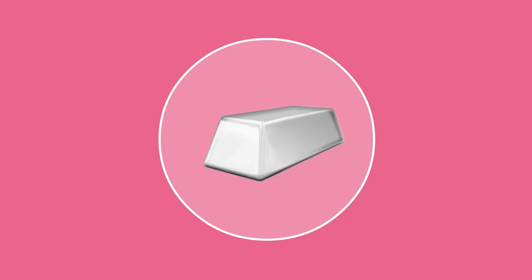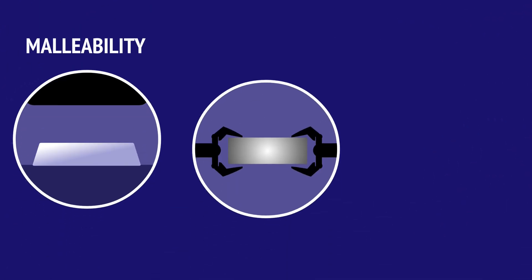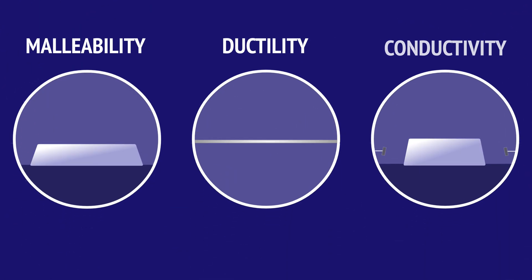In this video, we explore the structure and atomic bonding of metals, and we show how this accounts for the physical properties of metals like malleability, ductility, and conductivity.